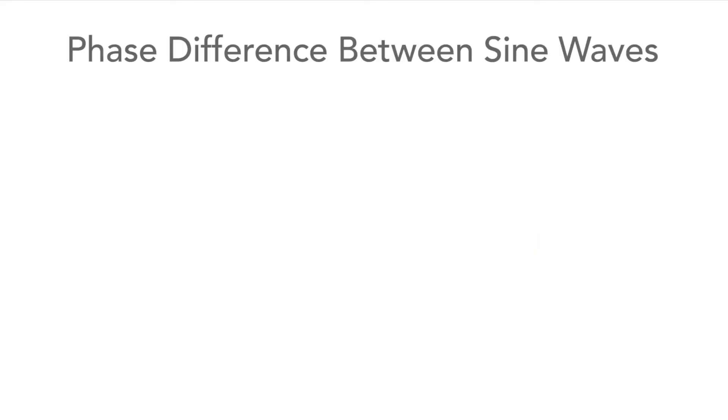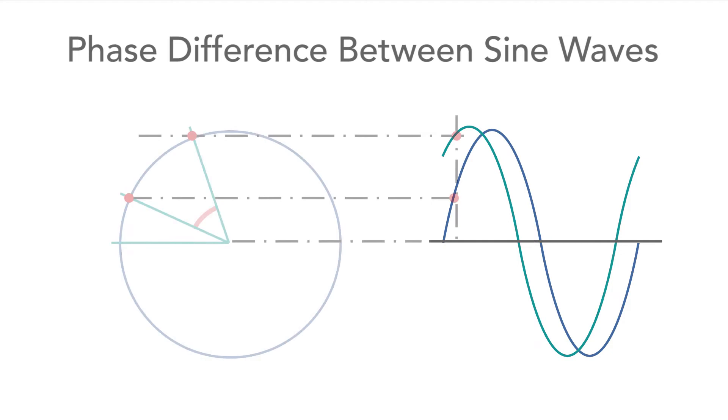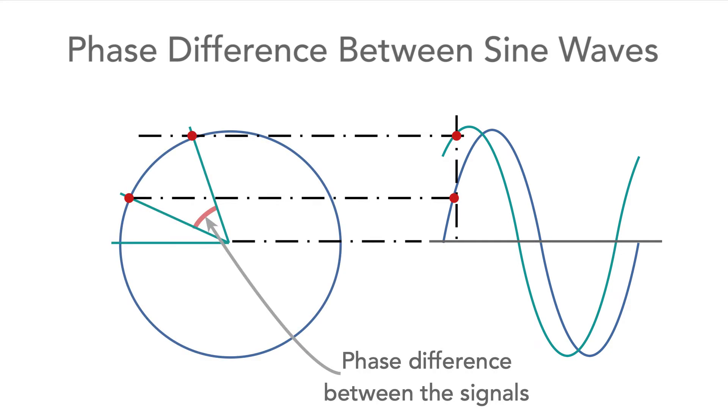For example, if there are two sine waves each with the same frequency, then the phase difference between them can be discovered by looking at the phase offset variable. The difference in this variable between the two sine waves will be the phase difference between them.